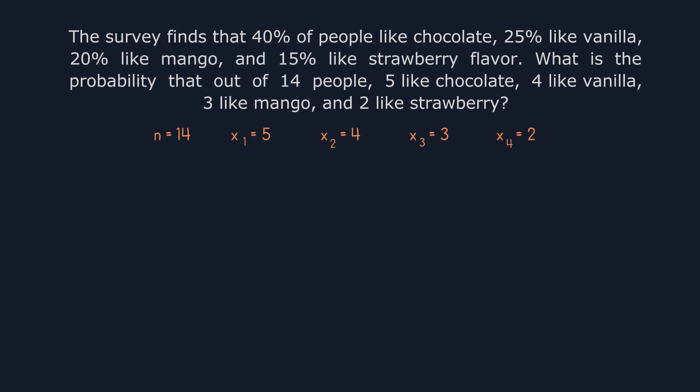The probability of liking chocolate, p1, is 0.4, since 40% of people like chocolate. The probability of liking vanilla, p2, is 0.25. The probability of liking mango, p3, is 0.2. And the probability of liking strawberry, p4, is 0.15.